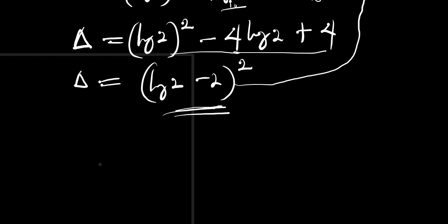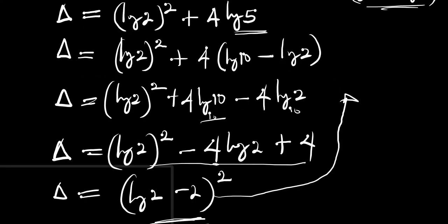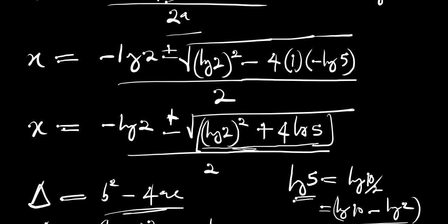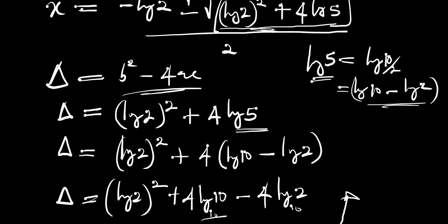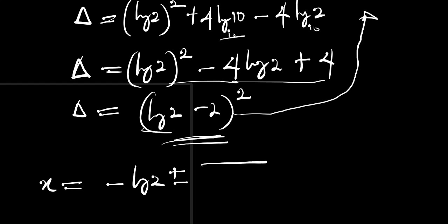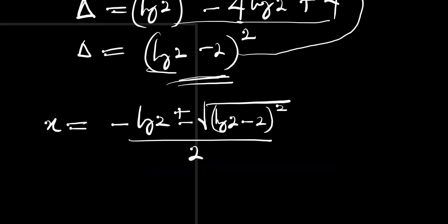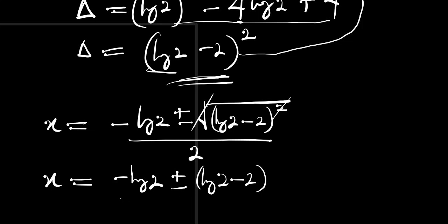So we insert this into the quadratic formula. Our x equals negative log of 2 plus or minus the square root of (log of 2 minus 2) squared, divided by 2. The square root cancels with the square, giving us log of 2 minus 2, divided by 2.